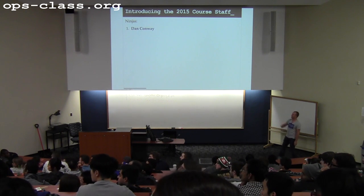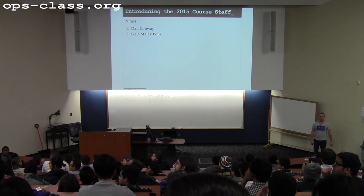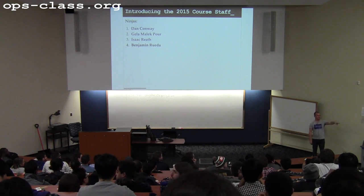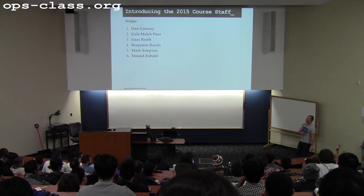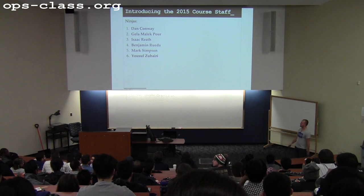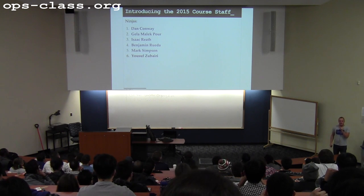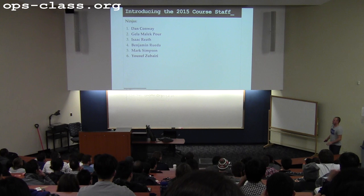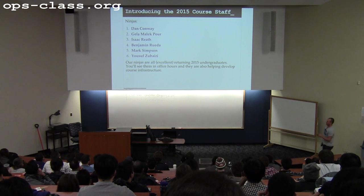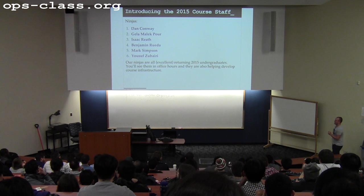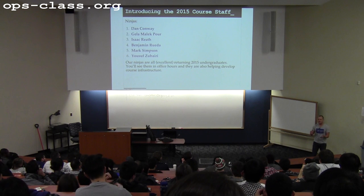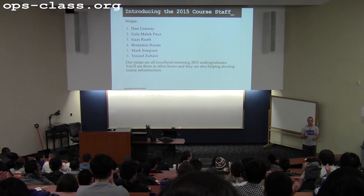So here are the people we have this year: Dan Conway, Gayla, Isaac, Ben, Mark, and last but not least, Yusuf — they're in alphabetical order, so Yusuf is always at the bottom. This group is going to be primarily helping out with office hours and also helping us with some of the hacking we're doing this year to improve the course infrastructure. Let's give an early round of applause to the course staff for all the help you're going to get this semester.